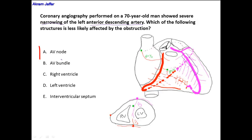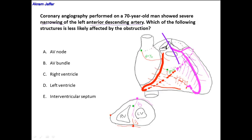In option A, the AV node — or the AV nodal branch — is a branch of the right coronary artery in 80% of cases, and of the left coronary artery in 20% of cases, but specifically it is a branch of the circumflex artery, not of the left anterior descending. Therefore, the AV nodal branch will not be affected by this narrowing, and this will be the correct answer.